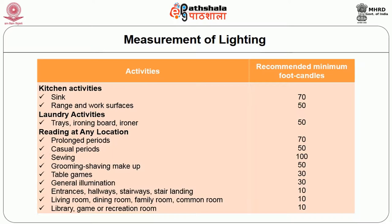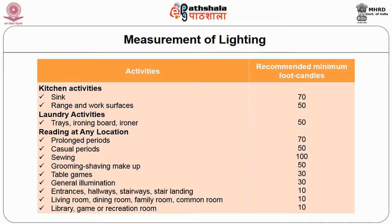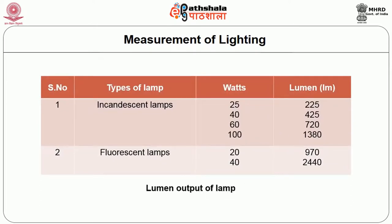General illumination requires 30 foot candles. Entrances, hallways and landings require 10 foot candles. Living room, dining and family room require 10 foot candles. Library and game or recreation areas require 10 foot candles. In terms of watts to lumens: 25 watts equals 220 lumens, 40 watts equals 425 foot candles, 60 watts equals 720 foot candles, 100 watts equals 1380 foot candles. For fluorescent bulbs, 20 watts equals 970 foot candles, and 40 watts equals 2440 foot candles.